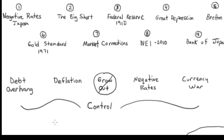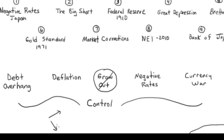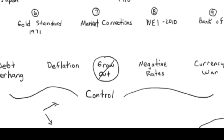One thing we know for sure is negative interest rates, or the experiment of negative interest rates, can certainly create trends in the market, whether it's an uptrend or a downtrend. Most of you only make money when the markets go up and you get killed in the downs, the 2008s and so forth. Our platform is designed to actually make you money in an uptrend or a downtrend.